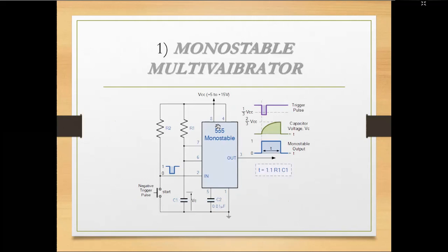In the monostable multivibrator diagram, two resistors are used; pin 4 and pin 8 are interconnected. Resistor R1 is present and R2 is empty. The trigger pulse changes from 1/3 Vcc to 2/3 Vcc. The timing formula is T = 1.1 × R1 × C. The circuit uses a 0.01 microfarad variable capacitor.